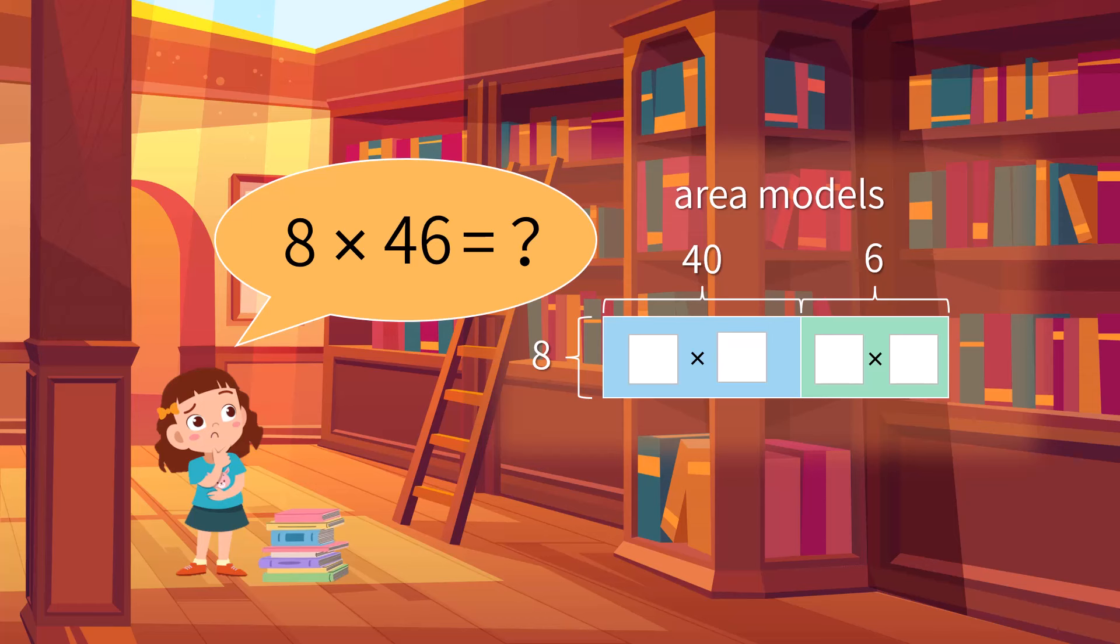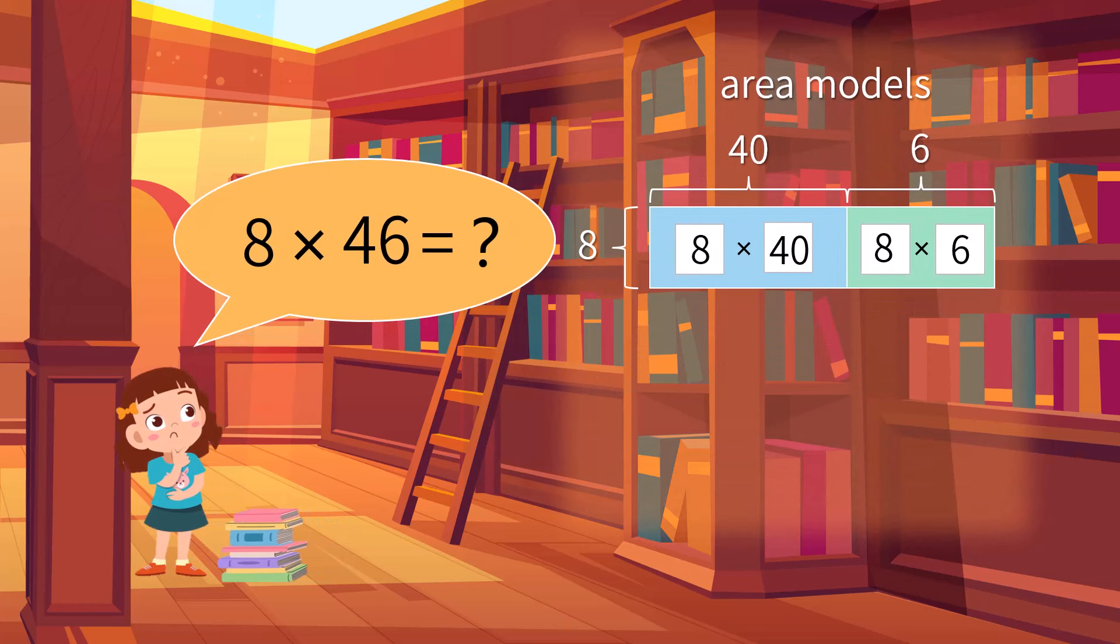The equation thus is now 40 times 8 plus 6 times 8. The remainder of the work is simply doing easy multiplication and addition. 40 times 8 leads to 320 while 6 times 8 is 48.